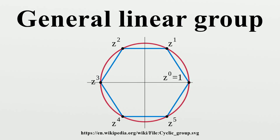As a Lie group: Real case. The general linear group GL(n,R) over the field of real numbers is a real Lie group of dimension n².